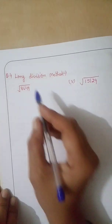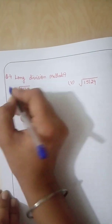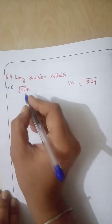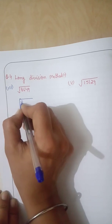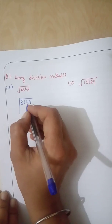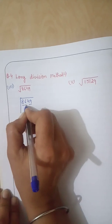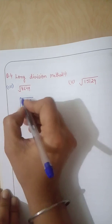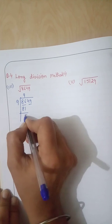Now, second method, long division method. It is question number 4, third part. We will write 18,649. For this, we make pairs from right to left. Now 86 is divisible by 9. 9 times 9 is 81. 6 minus 1 is 5.